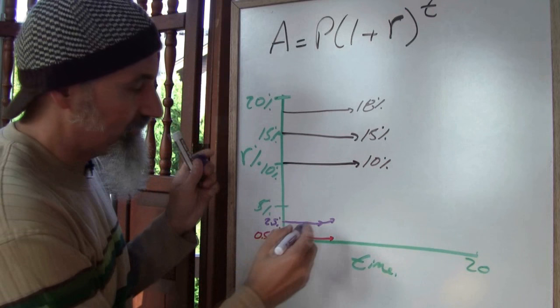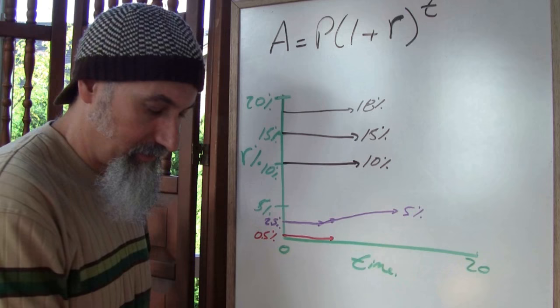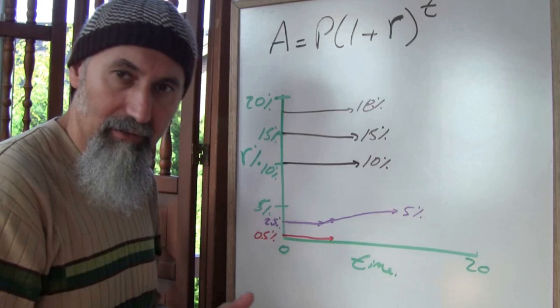Even if their interest rate doubles to 5%, money lenders are way ahead compared to people paying 15–18% on credit cards. And if you extend this to the limit — if you're constantly carrying a balance on credit cards and constantly paying interest — the compounding effect means you're falling further and further behind.